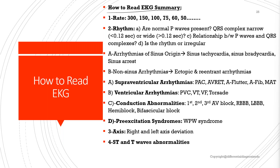The quick summary of how to read EKG: start with rate, then rhythm. To determine that the rhythm is normal, the patient should have normal P waves followed by a QRS complex that should be narrow. We also look at the relationship between P waves and QRS complexes, and whether the rhythm is regular or irregular. If the rhythm is irregular, we look for arrhythmia, which can be of sinus origin or non-sinus origin.